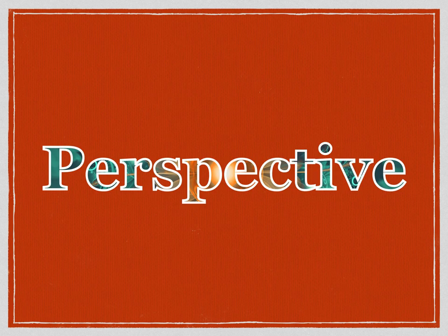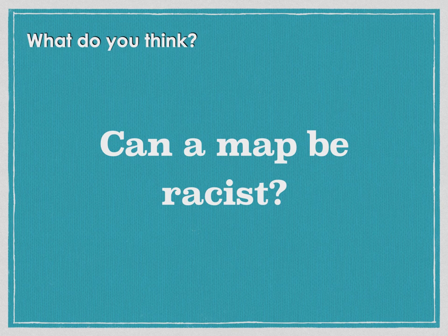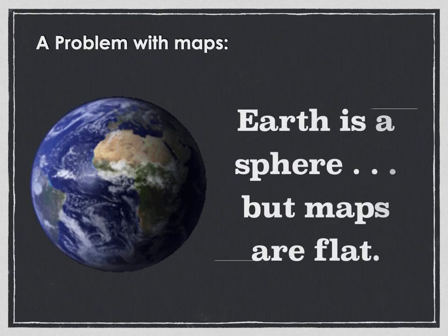With that, let's talk about perspective through the lens of maps. Can a map be racist? You probably have a knee-jerk reaction, yes or no, but think about this more deeply. Keep this question in the back of your mind. Now, there's a problem with maps: Earth is a sphere but maps are flat. When you take a 3D sphere and try to flatten it, you're going to distort certain shapes. And this is a problem for mapmakers.